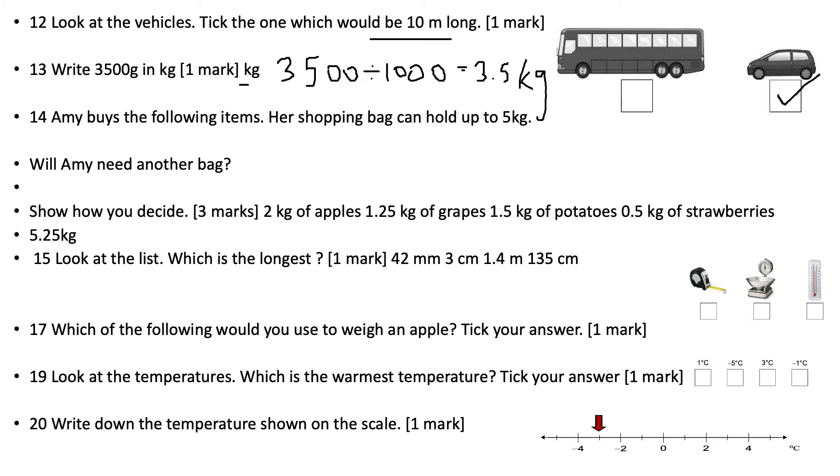Question number 14, Amy buys the following items. Her shopping bag can hold up to 5 kilograms. Will Amy need another bag? Show how you decide. 2 kilograms of apples, 1.25 kilograms of grapes, 1.5 kilograms of potatoes and 0.5 kilograms of strawberries. When I add these up, 1.5 plus 0.5 gives me 2 kilograms.